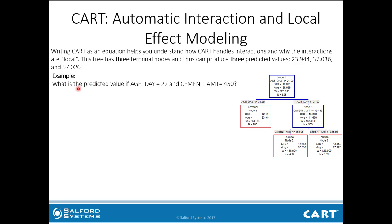As a brief example, what is the predicted value if age_day is 22 and the cement amount equals 450? We can just follow down the tree. Is age_day less than or equal to 21? No, it's 22, so we go to the right where age_day is greater than 21. Is cement amount less than or equal to 355.95? No, because cement amount is 450, so we go to the right, and our predicted value is 57.026.